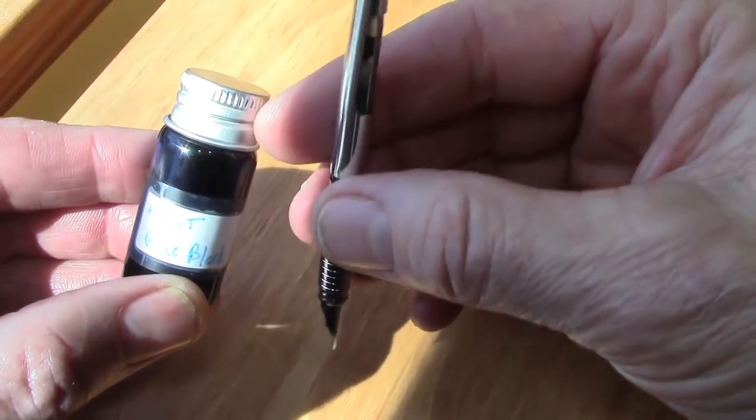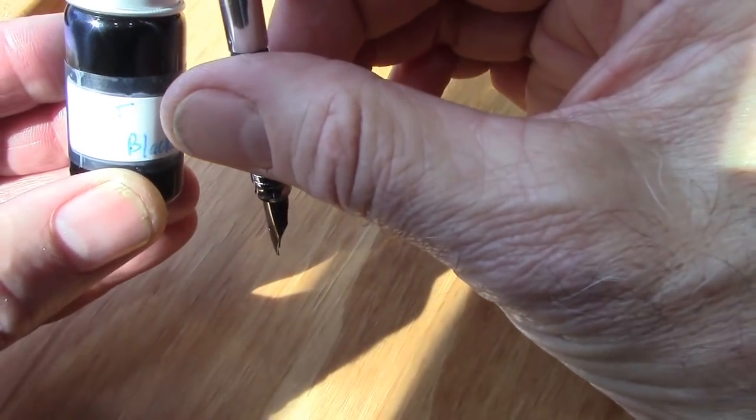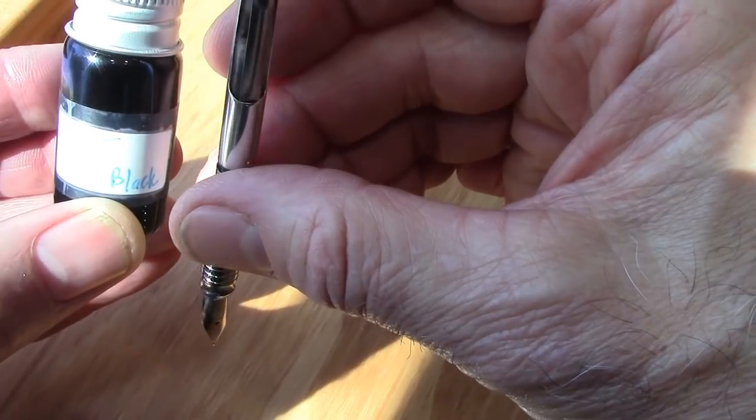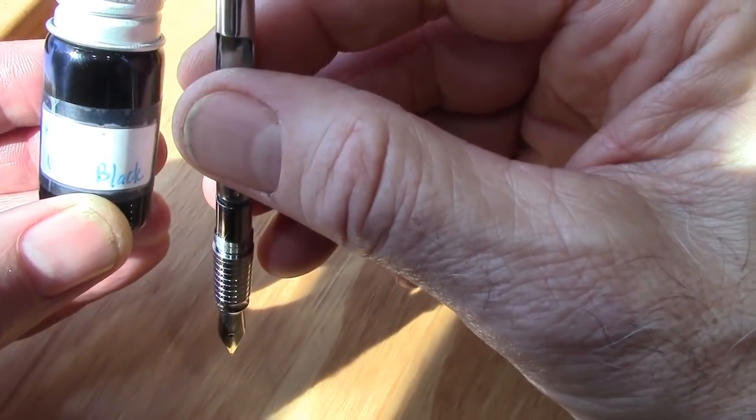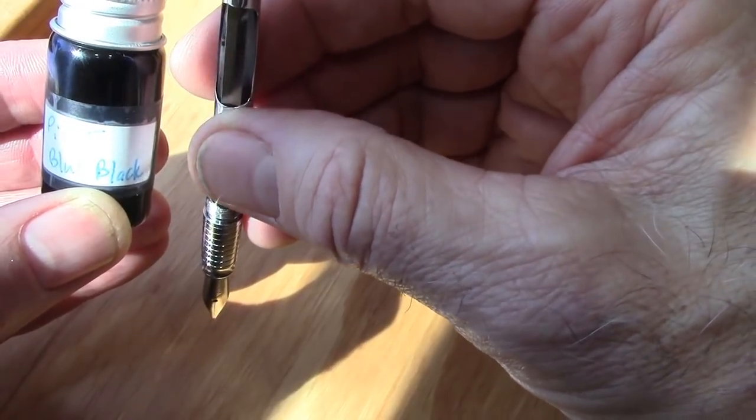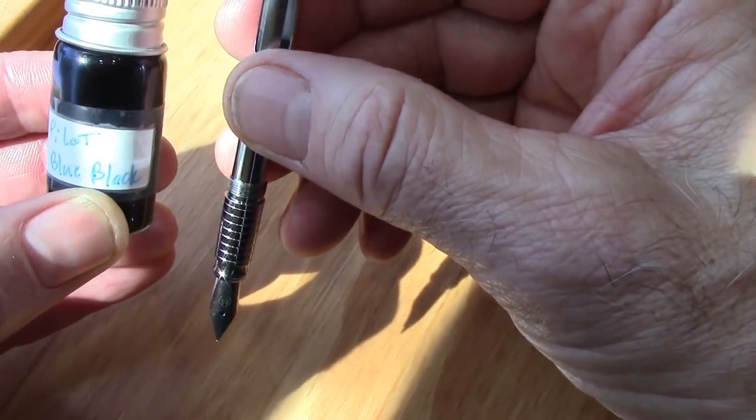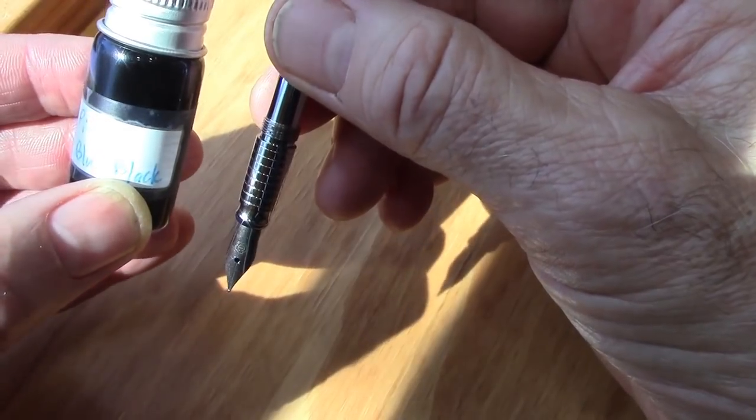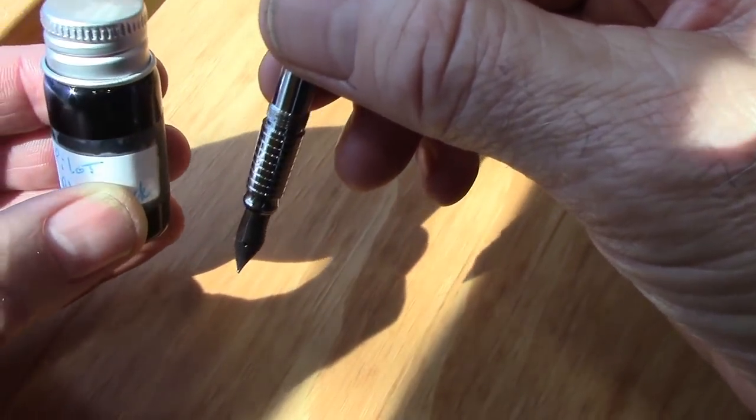So I dunked this in. And in order to get this a little bit less than half full, it took about 10 pumps. It took about five or six until I actually started seeing ink come up into the sack. So filling is not the easiest and it takes a little bit of effort. But let's see how it writes.